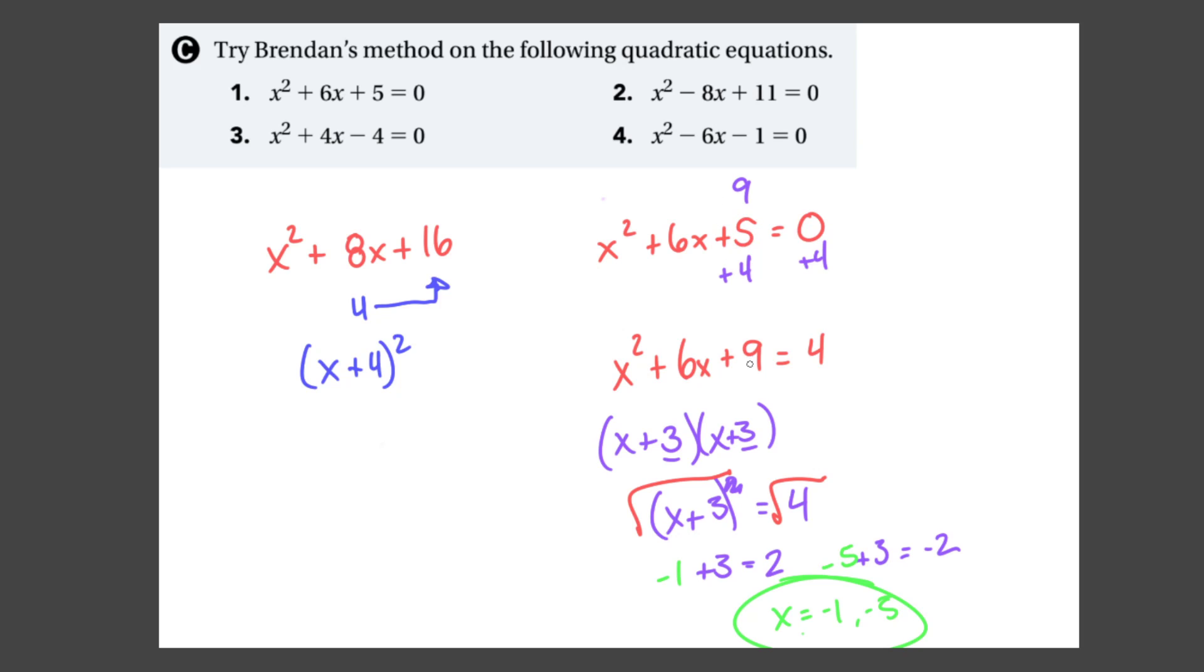There we go. The answer for the first one is x = -1 and x = -5. This is completing the square. We complete the square first, and then we're able to solve the actual problem. I could not factor this, so I had to complete the square first. I'm going to very quickly go through the second problem as well.